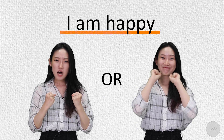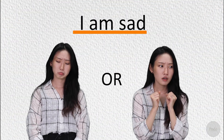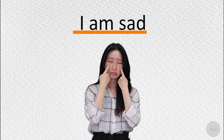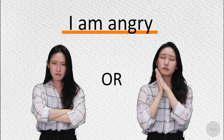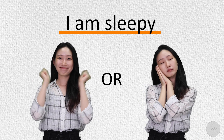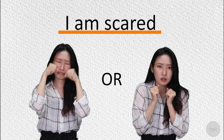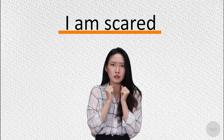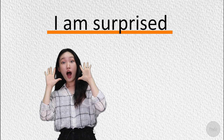I am happy. I'm happy. I am sad. I'm sad. I am angry. I'm angry. I am sleepy. I'm sleepy. I am scared. I'm scared. I am surprised. I'm surprised. For the second quiz, pick the correct sentence that goes with the emotion.